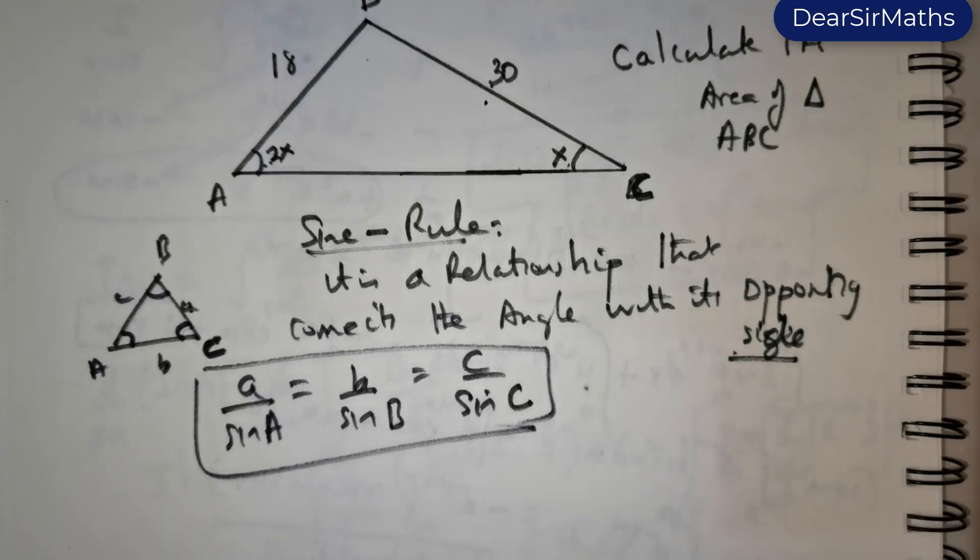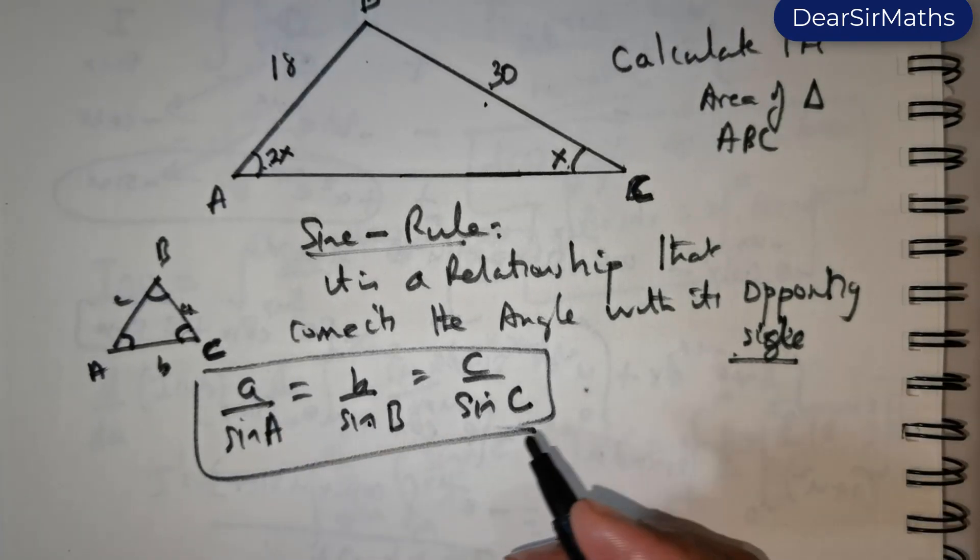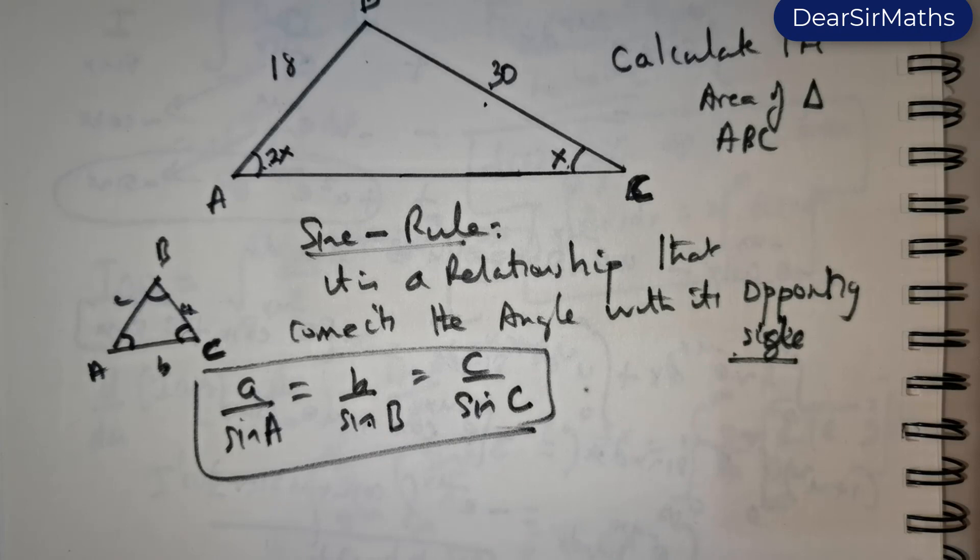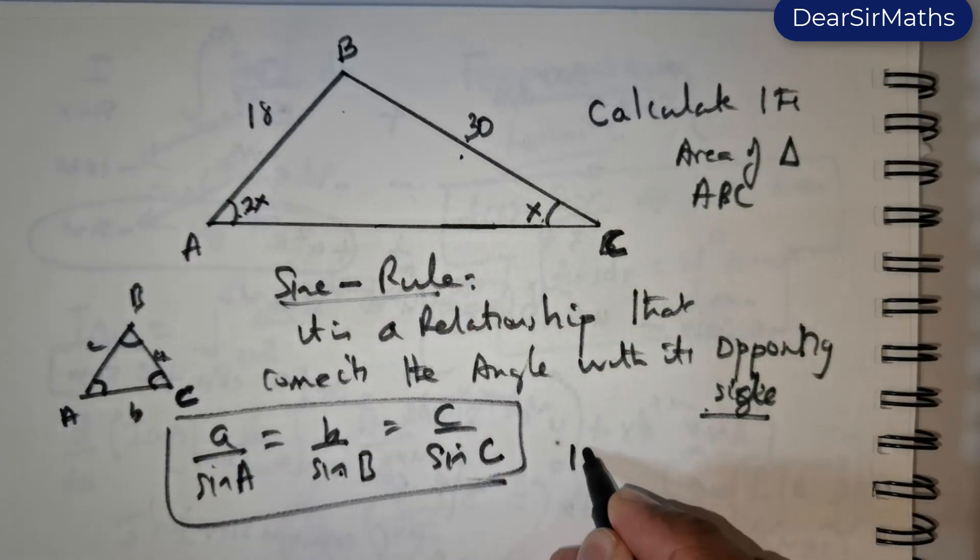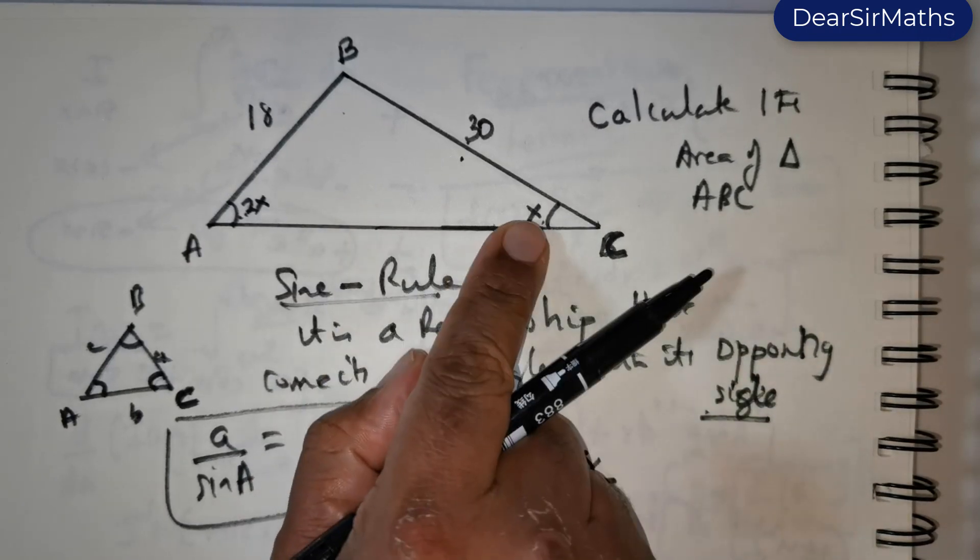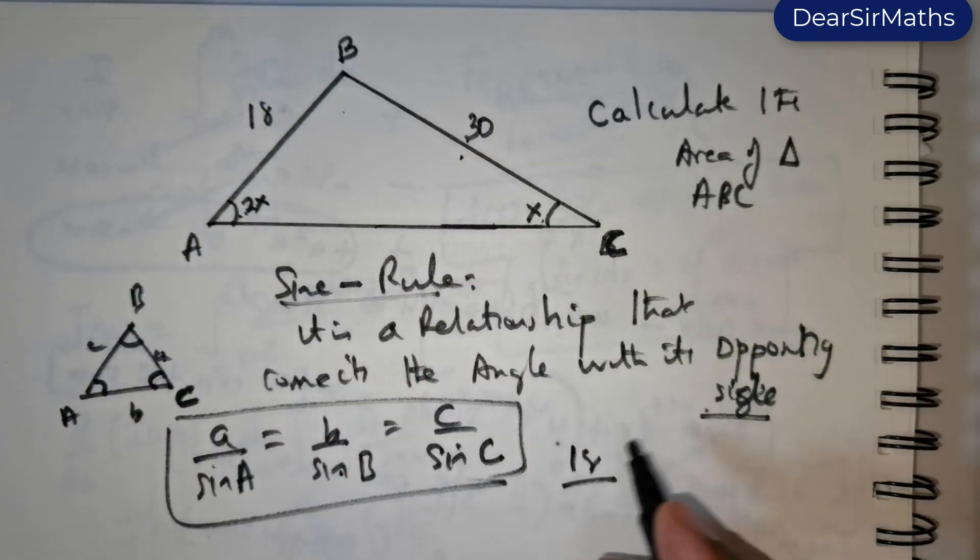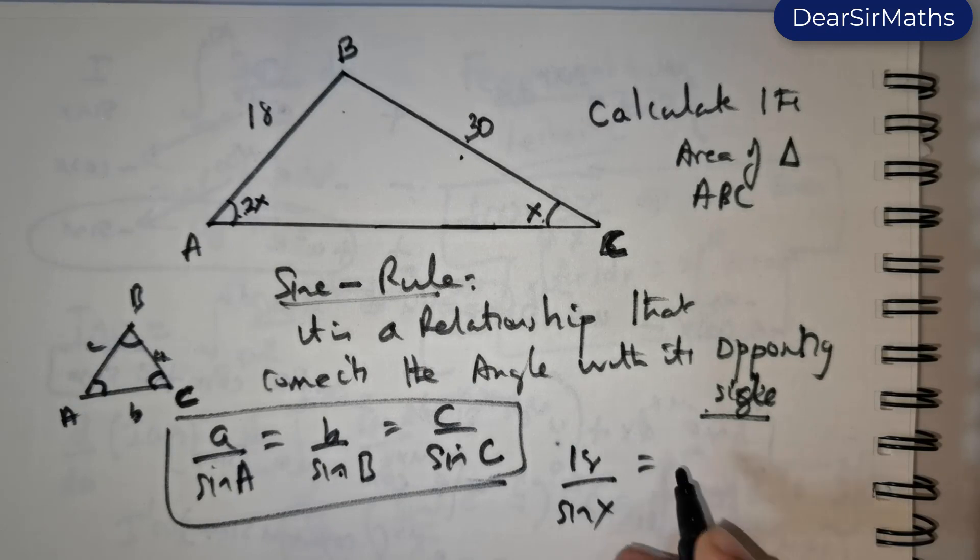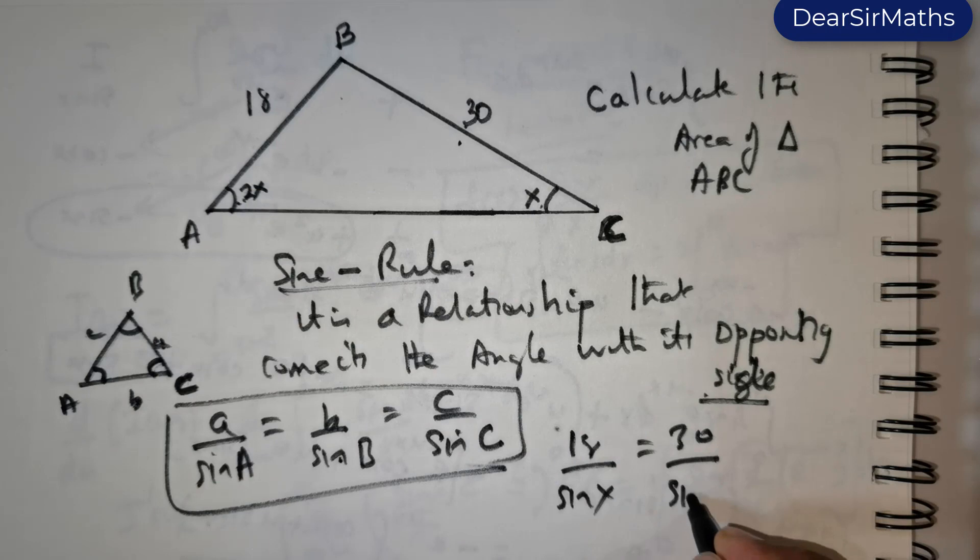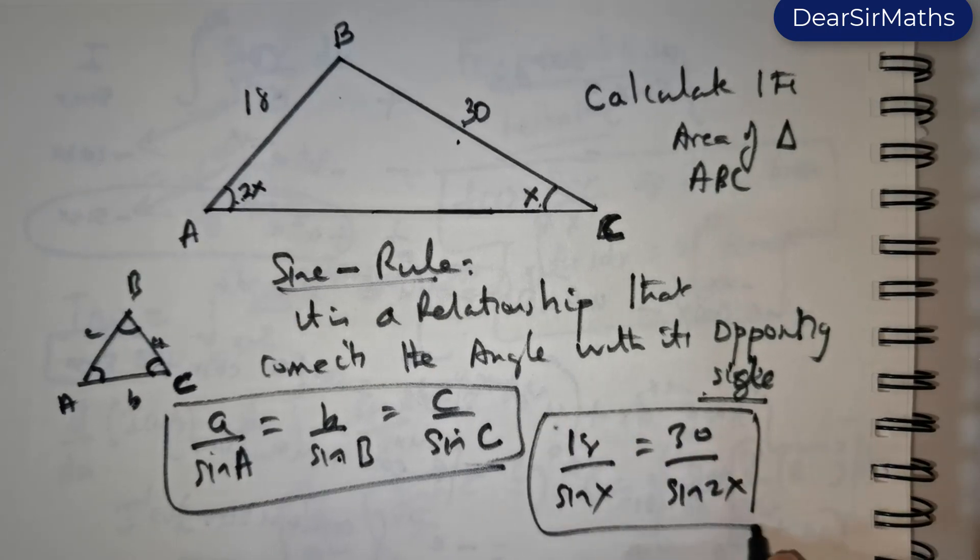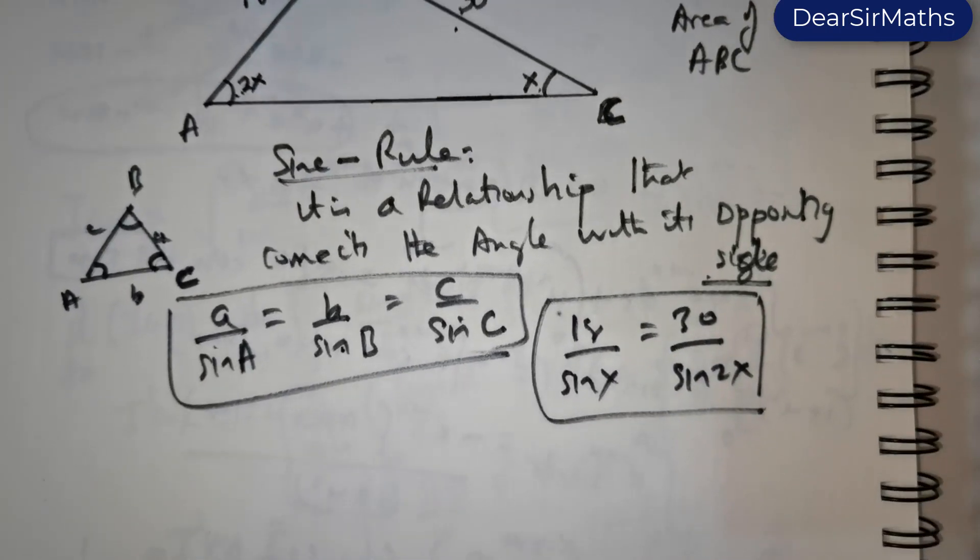Now you can take two at a time and solve to find out these sides. That is exactly what I am going to do. So in this case, I would like to take 18 divided by sin x and equate it with 30 divided by sin 2x. So this alone is sufficient for me to get the result.